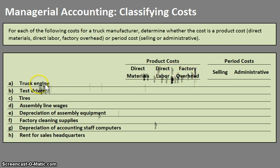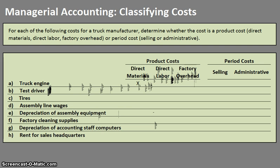The truck engine is a very prominent part of manufacturing that truck, so it would be considered a direct material. For the test driver, they are part of the manufacturing process — at the factory making sure all plans are working correctly. However, they're not directly involved in manufacturing the truck, so they are actually considered a factory overhead cost, since it's not a material going directly into the product and not labor directly creating it.